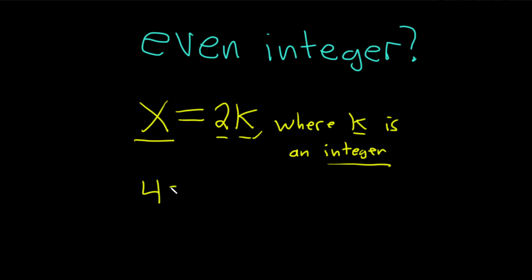So for example, 4 is 2 times 2, so in this case your k is 2. 8 would be 2 times 4, and your k is 4.